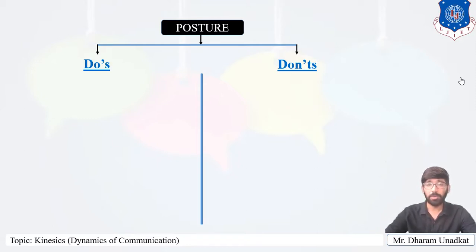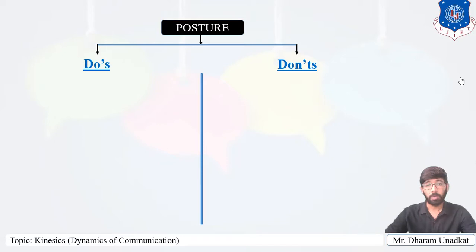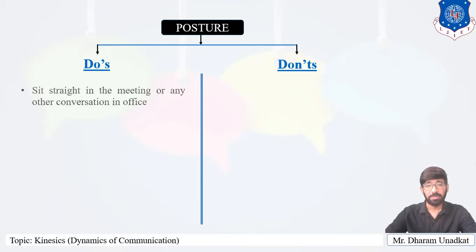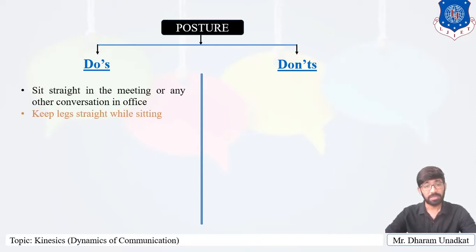Let's first see the do's and don'ts of posture. In the last video we discussed what posture is — it is the movement of how we stand, how we sit, and how we walk, and what we have to keep in mind to present our posture effectively. The do's of posture: first, sit straight in a meeting or any other conversation in the office. Second, keep legs straight while sitting.